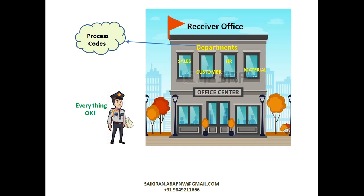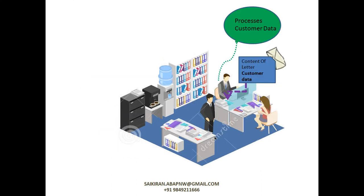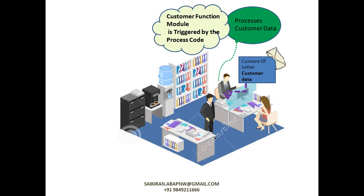So in our ALE technology terminology, we call the departments process codes. We have different process codes, and the IDOC needs to be submitted to a particular process code. He goes to the particular department — that is the customer department, nothing but the process code — and hands it over to the customer department. The customer department opens the envelope and reads out the actual content of the letter that you have written. That reading or processing of the content is nothing but processing the customer data. It is nothing but a function module assigned to the process code — that is the department. The function module is a piece of code that actually reads and processes the content of the data.